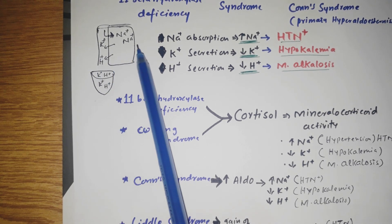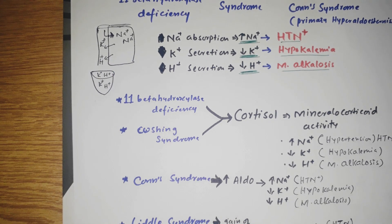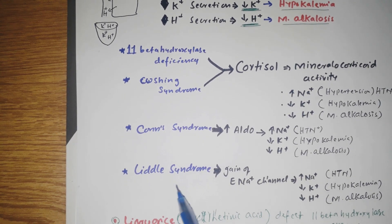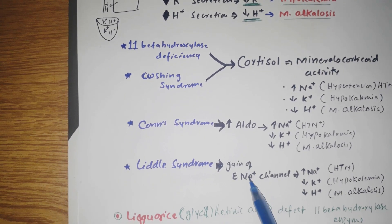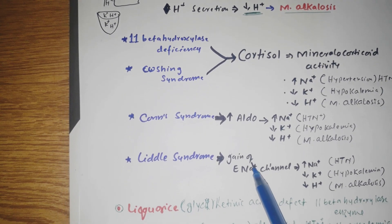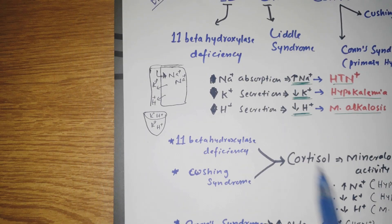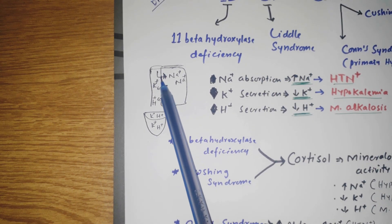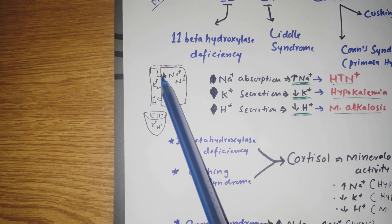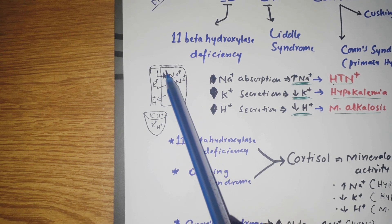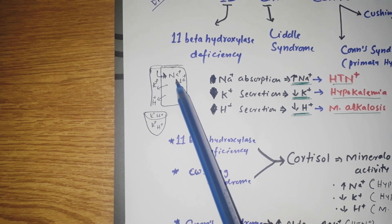Liddle syndrome involves a gain-of-function mutation in the sodium channel, meaning the channel becomes more activated. This causes more sodium absorption, leading to hypertension, along with increased secretion of potassium and hydrogen.